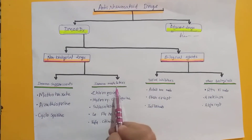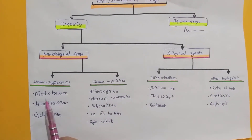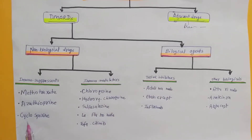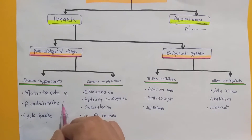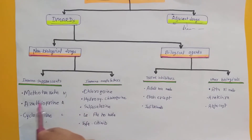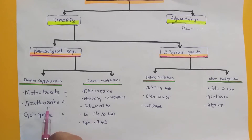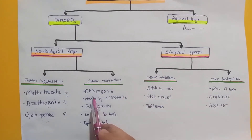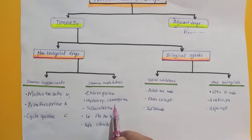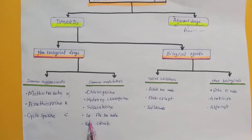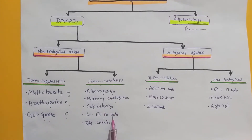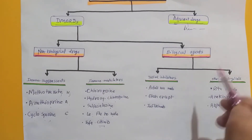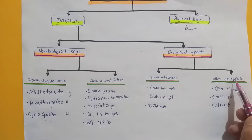In non-biological drugs, there are immunosuppressants and immunomodulators. Under immunosuppressants: methotrexate, azathioprine, and cyclosporine — remember by the mnemonic MEC. Under immunomodulators: chloroquine, hydroxychloroquine, sulfasalazine, leflunomide, and tofacitinib. In biological agents, there are TNF-alpha inhibitors and other biological agents.